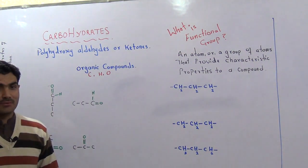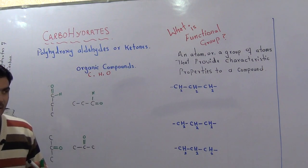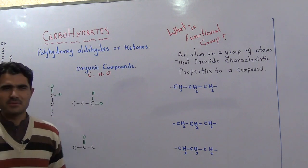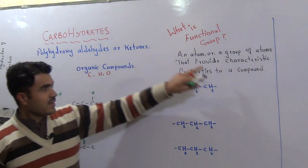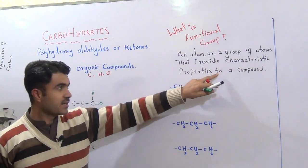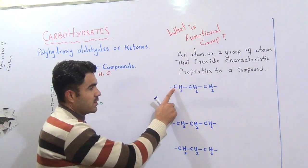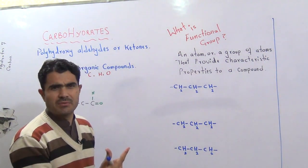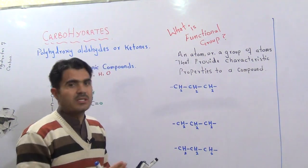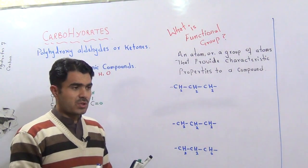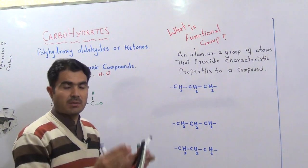Now we go to the next thing: functional groups. Don't worry — this is also very necessary and compulsory. We must understand what a functional group is. An organic compound is a compound which contains carbon atoms, and usually hydrogen atoms are also present, though exceptionally some organic compounds do not contain hydrogen. The carbon atom is necessary and compulsory, so compounds of carbon are called organic compounds.